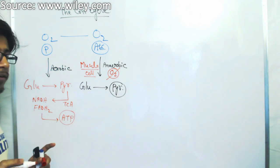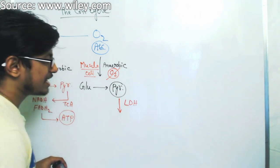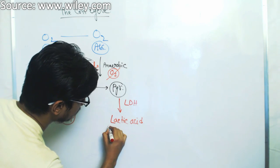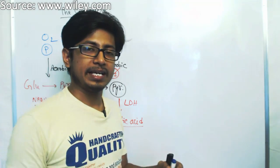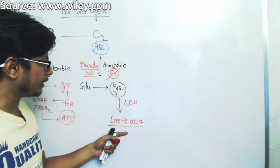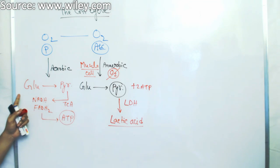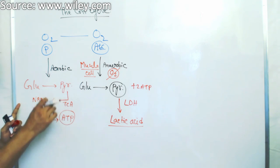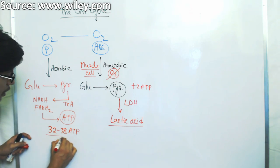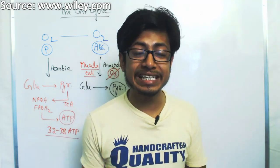However, pyruvate cannot be converted to acetyl-CoA and the TCA cycle is blocked because there is no oxygen as the terminal electron acceptor, so the electron transport chain will not occur. As a result, pyruvate accumulates, and an enzyme called lactate dehydrogenase starts working on the pyruvate and converts it into lactic acid or lactate. This lactic acid buildup in the muscle cell is very bad for our health. From glucose to pyruvate we only gain a net of two ATP molecules, whereas a single glucose molecule going through glycolysis, the Krebs cycle, and electron transport chain can yield up to 32–38 ATP molecules — so the muscle cells are lagging at least 30 ATP molecules.